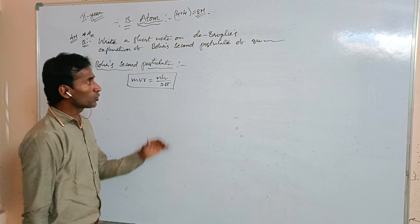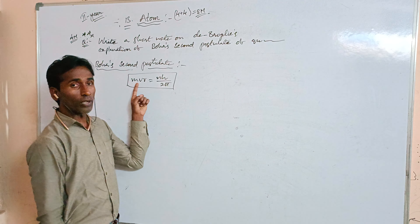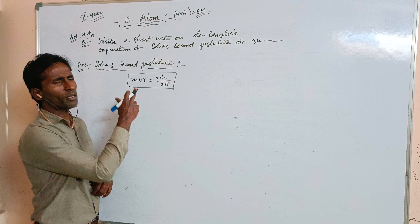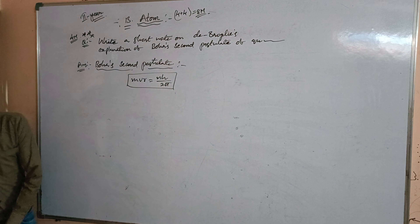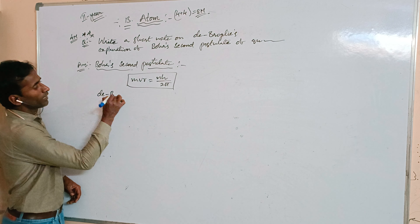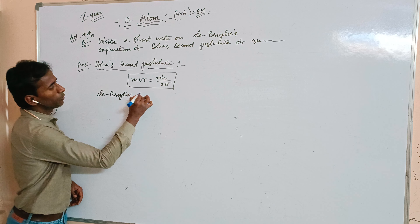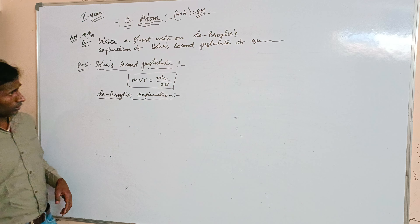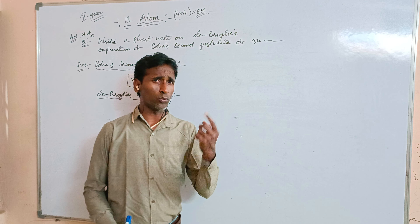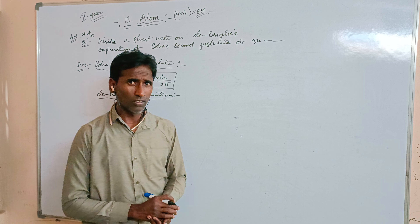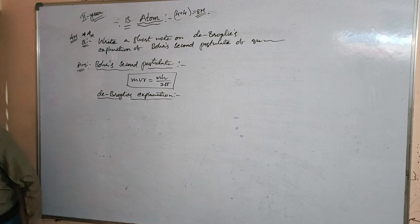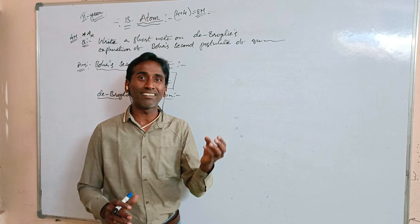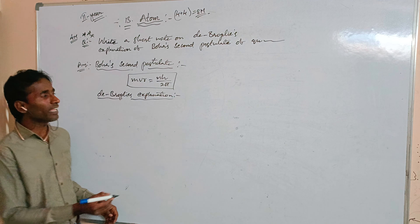Bohr's second postulate states that, just as planets revolve around the nucleus, electrons revolve around the nucleus in a stationary orbit. The angular momentum of an electron in a stationary orbit is quantized. The formula is: mvr equals nh/2π, where m is the mass of the electron, v is the velocity, r is the radius, n is an integral number, and h is Planck's constant.